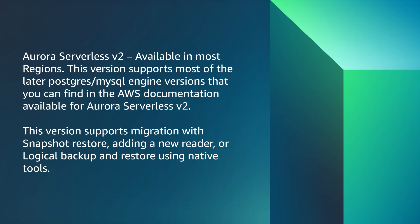Aurora Serverless v1 supports migration with either snapshot restore or logical backup and restore using native tools. Aurora Serverless v2 is available in most regions and supports most of the later Postgres and MySQL engine versions. This version supports migration with snapshot restore, adding a new reader, or logical backup and restore using native tools.